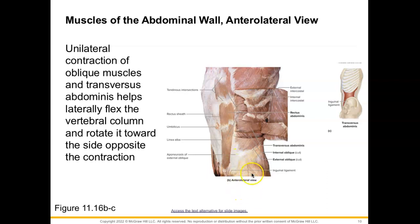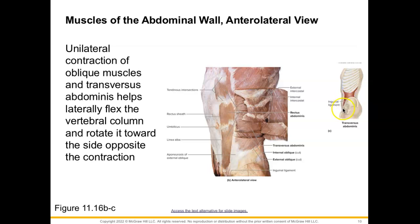With the aponeurosis of the external oblique, you can see how it forms the inguinal ligament. That inguinal ligament spans from the ASIS — the anterior superior iliac spine — over to the pubic tubercle.